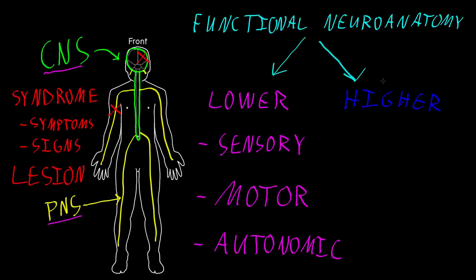Inside the category I like to call higher neural functions — which you could also call the more complex neural functions, or the more mental functions that the nervous system performs — the higher neural functions are not performed by many parts of both the central and peripheral nervous system. The higher functions are primarily performed by the central nervous system, and in particular, parts of the brain are really responsible for the higher neural functions. I also like to divide these up into three big categories.